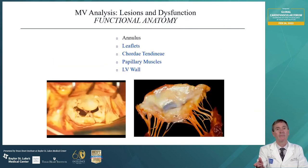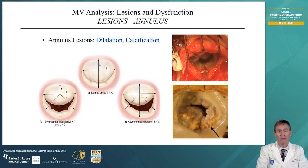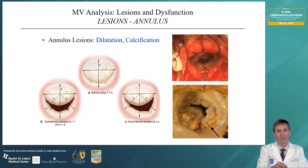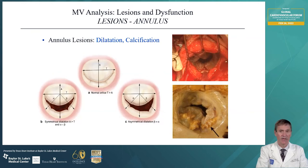Looking at the functional anatomy of the valve, we start with the annulus and work down from there. Lesions of the annulus can include either dilation or calcification. A dilation can be either symmetrical, completely dilating the entire posterior portion — the anterior portion usually does not dilate because it's fibrosed in that region. It can be asymmetrical dilatation, as shown in the right lower image, if ischemia affects one region more than another. The images demonstrate heavy calcification of the annulus in the bottom image and a dilated annulus in the upper image.